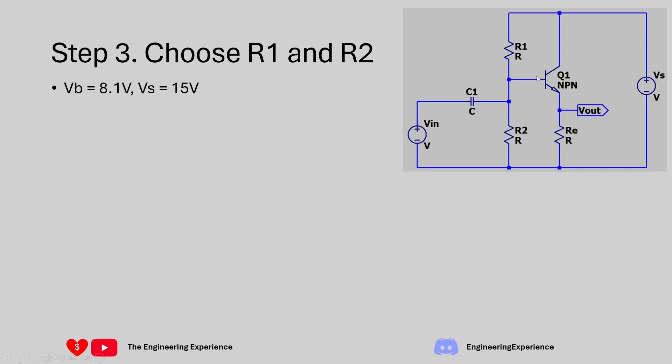Previously we calculated that VB needs to be equal to 8.1 if we want 7.5 on Vout and we know our power supply is 15 volts. We need to do the potential divider that creates 8.1 volts over here. We can find out the ratio between 8.1 and 15 volts so that gives me 0.54. If we normalize our total resistance to 1, 0.54 of that resistance will be on R2 and the remainder which is 0.46 will be on R1.